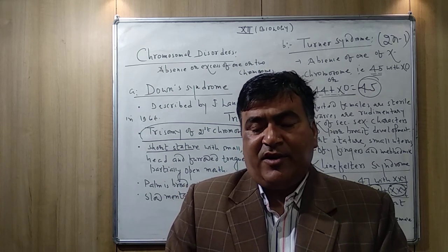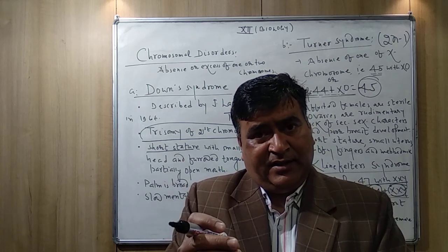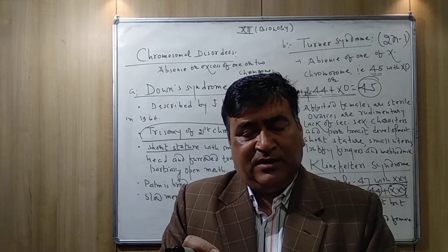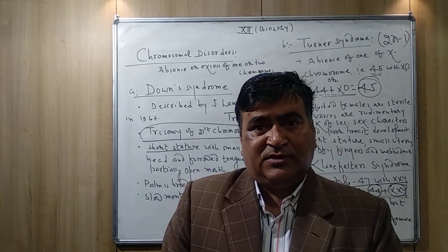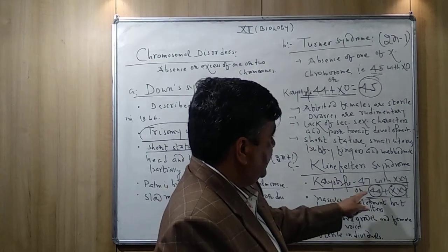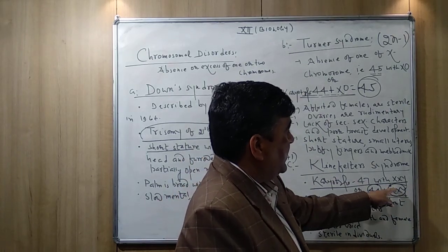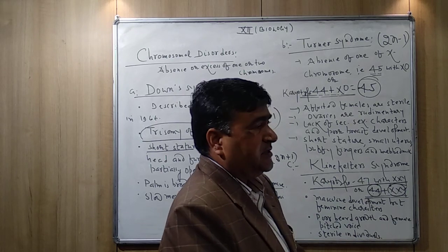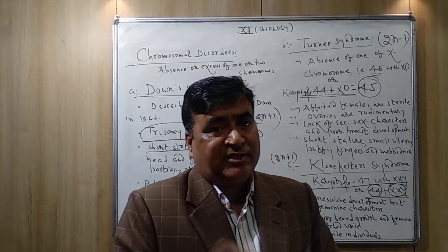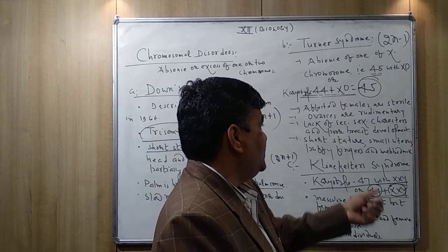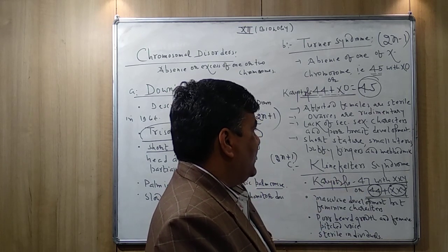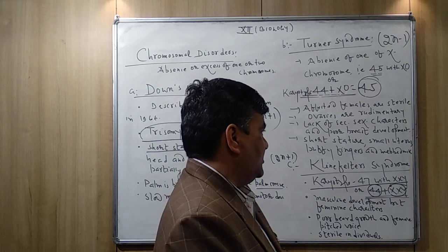The extra chromosome is not on the autosomes — it is the sex chromosome, an X chromosome. Because of this one extra X chromosome, the disease Klinefelter syndrome appears.